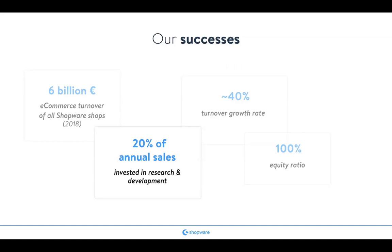That 20% going into research and development means we can test out new technologies, find a successful path for the future, and support all the technologies you may need. We also have 20% earnings before interest and taxes, which shows we are a healthy company that will be here not just for one more year, but for five, ten, twenty more years — for decades. If you go with Shopware, you can see from these numbers that we are going to be here for the future as well.